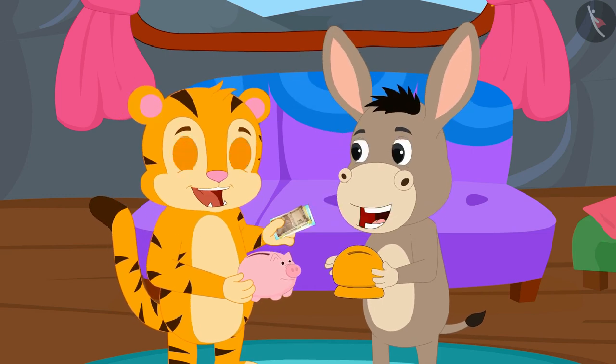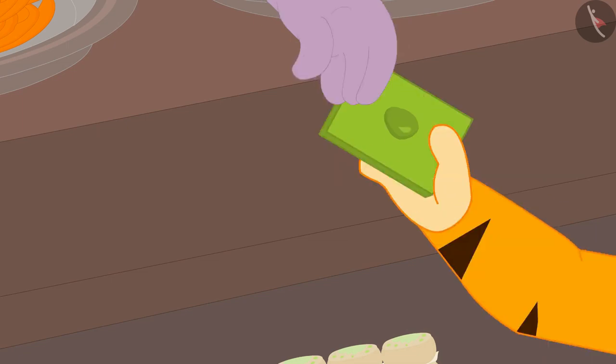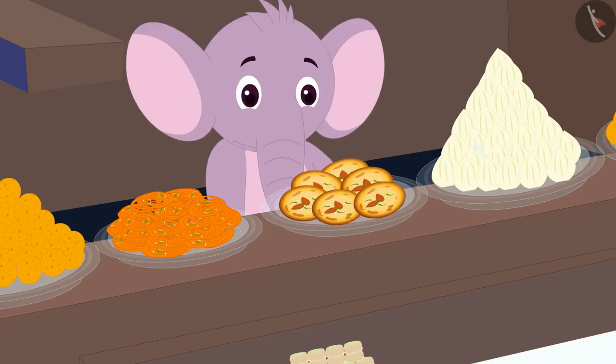Bhoola and Sher Khan collected money and bought cashew barfi and pistachio barfi from Appur's shop.